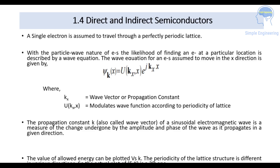Direct and indirect semiconductors. A single electron is assumed to travel through a perfectly periodic lattice. With the particle wave nature of the electrons, the likelihood of finding an electron at a particular location is described by the wave function. The wave function is assumed to move in the x direction and is given as phi of kx equals u(kx) of x times e to the power j*kx*x, where kx is the wave vector or propagation constant, and u_k(x) modulates the wave function according to the periodicity of the lattice.